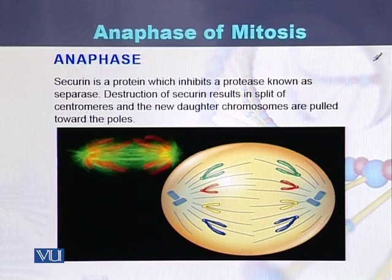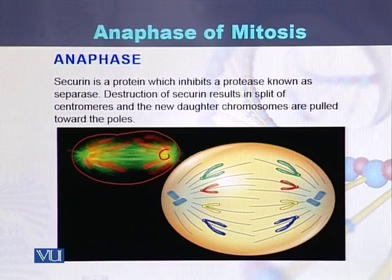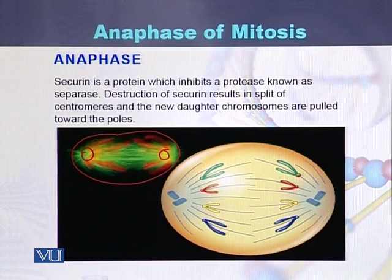Here we can see in the diagram that the chromosomes have been separated and they have arrived at the poles of the cell. These chromosomes are moving towards this pole and these chromosomes are moving towards this pole.